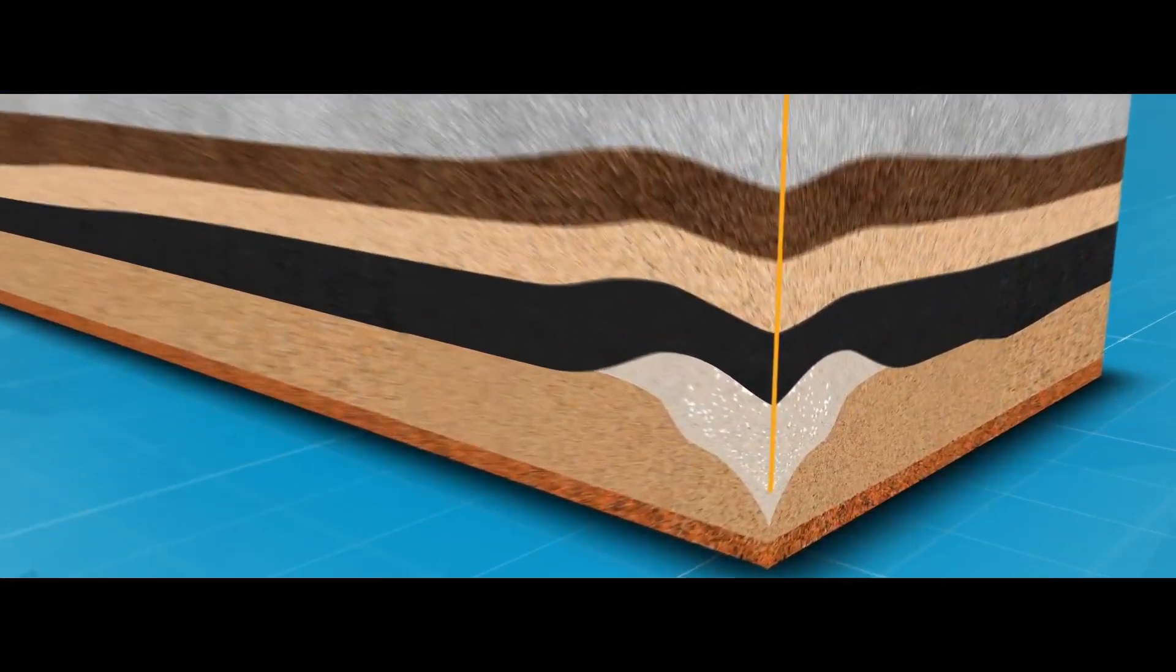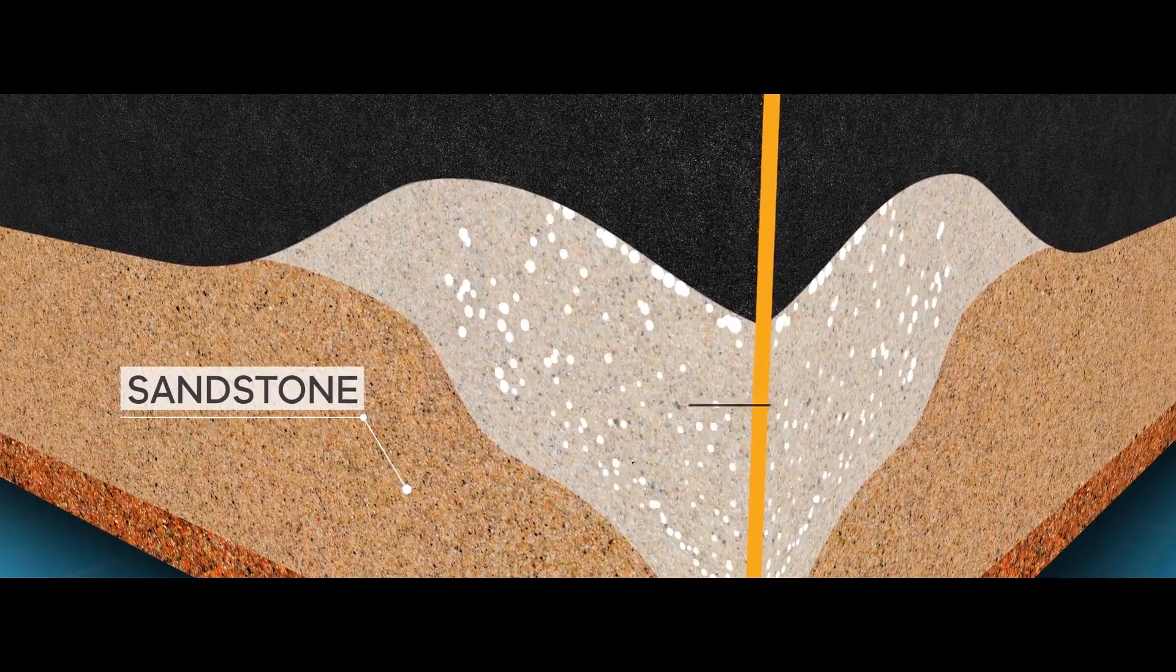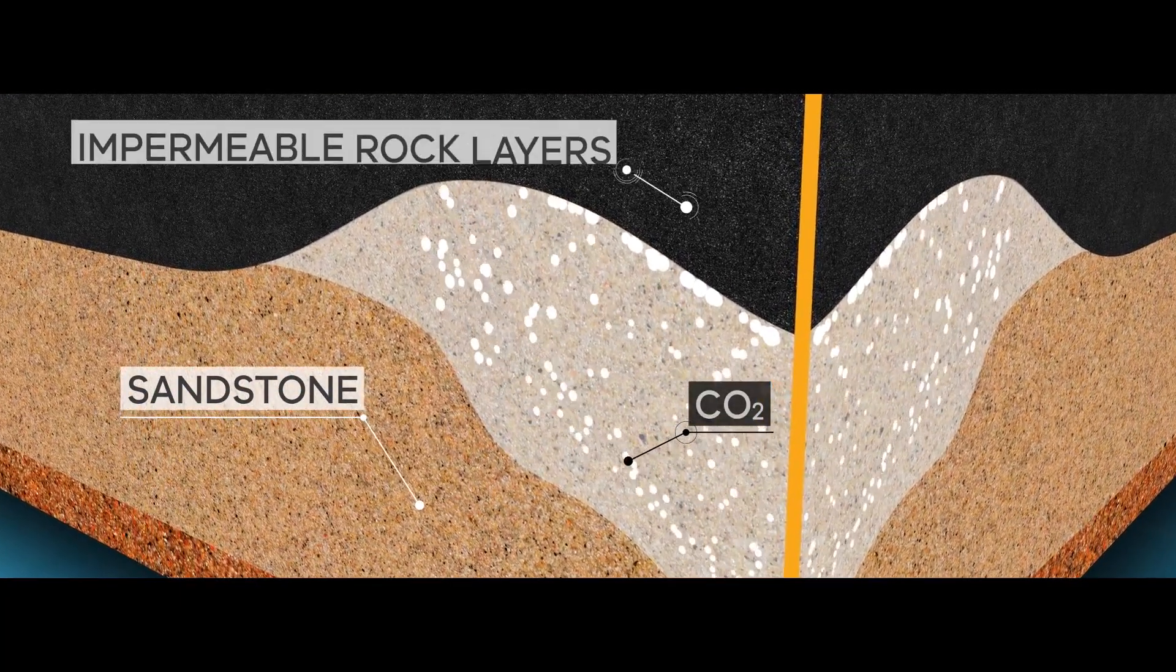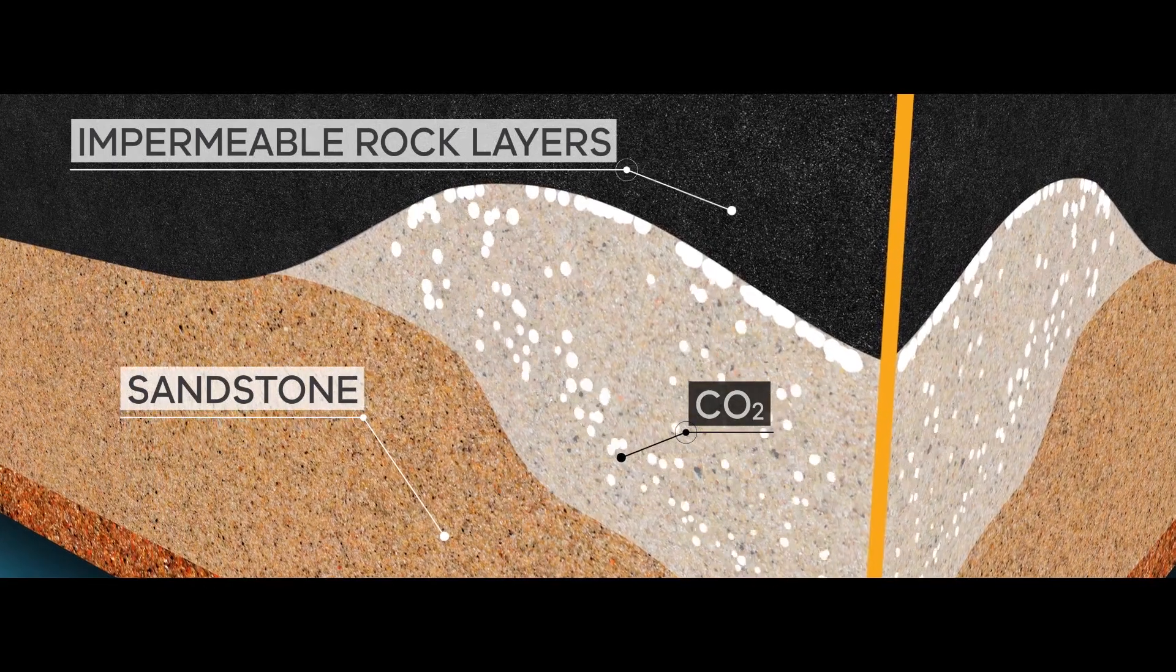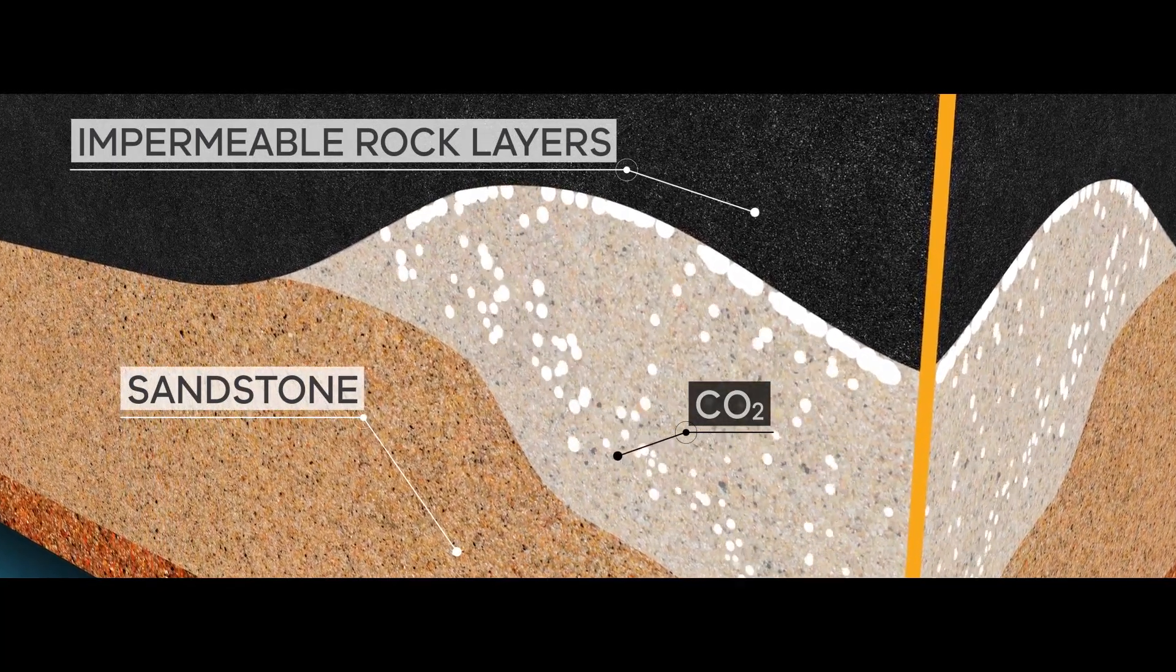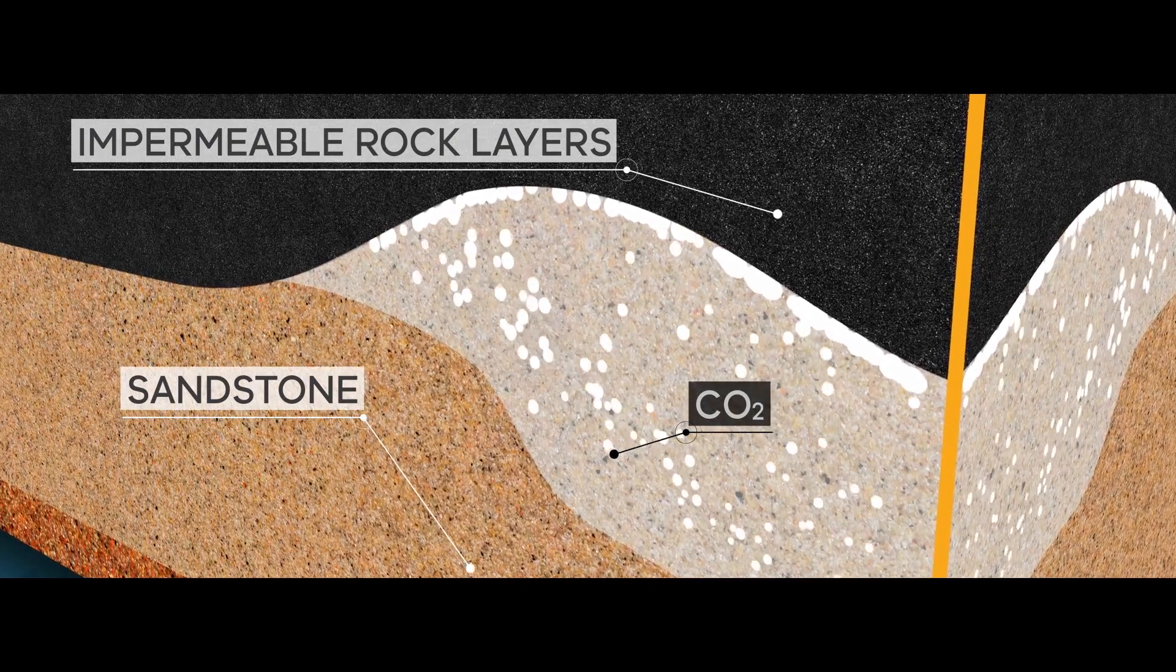Porous layers of sandstone act like a sponge to store the CO2, while the impermeable rock layers form the barriers which will permanently trap it, similar to the way oil and gas has been stored naturally for millions of years.